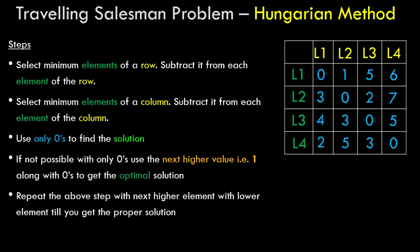Let me iterate through the steps and we'll see how to go about it when we solve the actual problem. Step one: select the minimum element of a row and subtract it from each element of that row. Step two: select the minimum element of a column and subtract it from each element of that column.